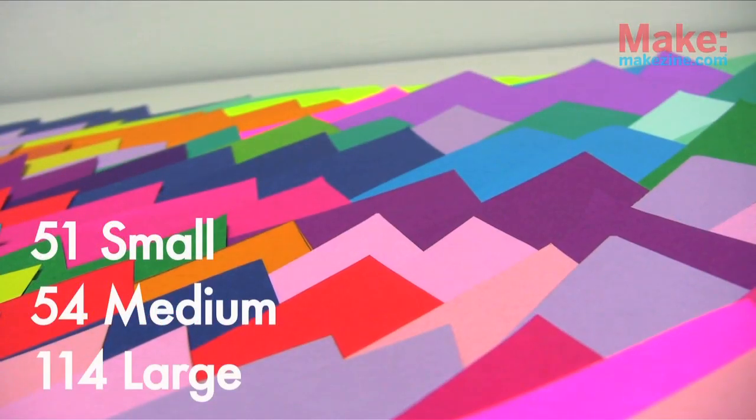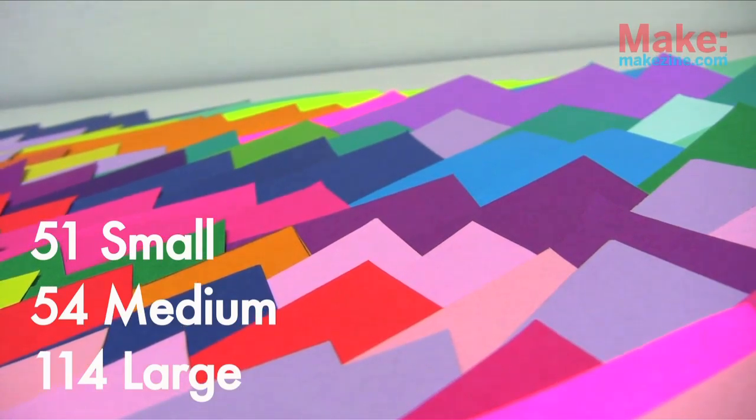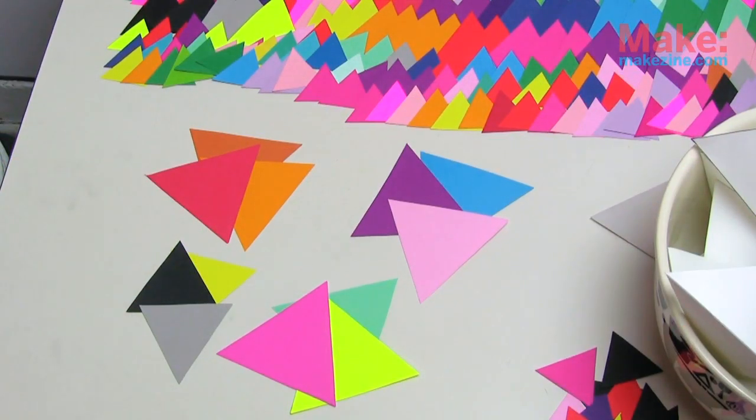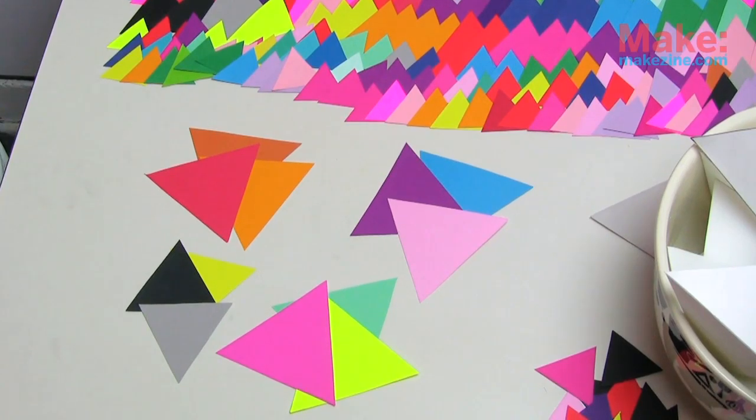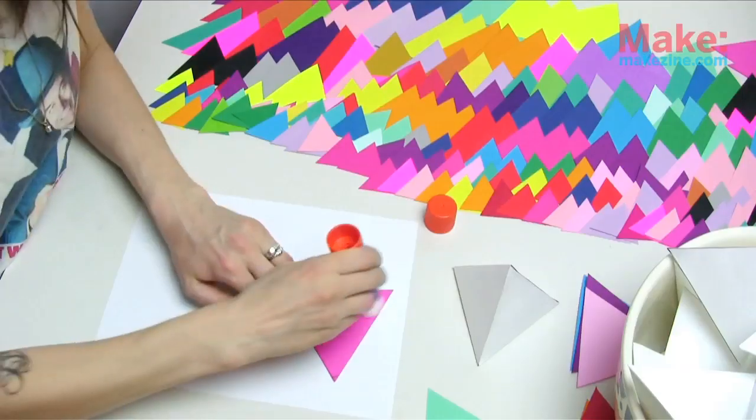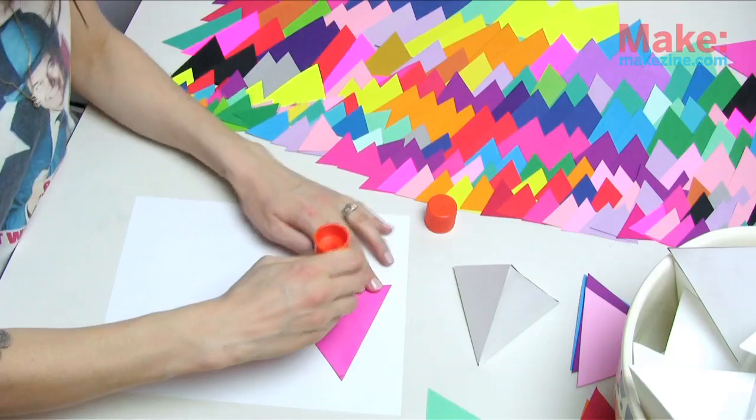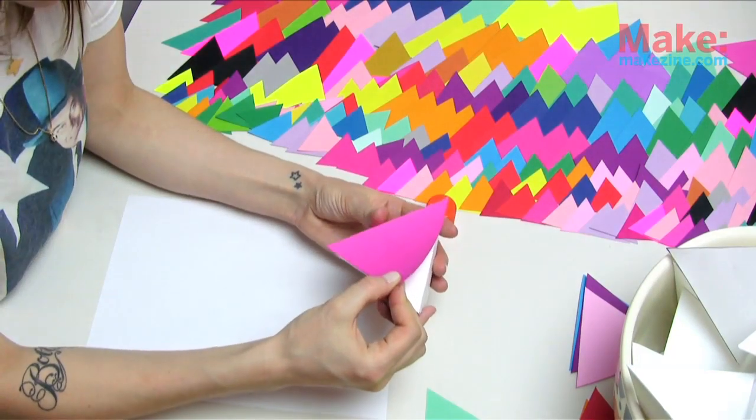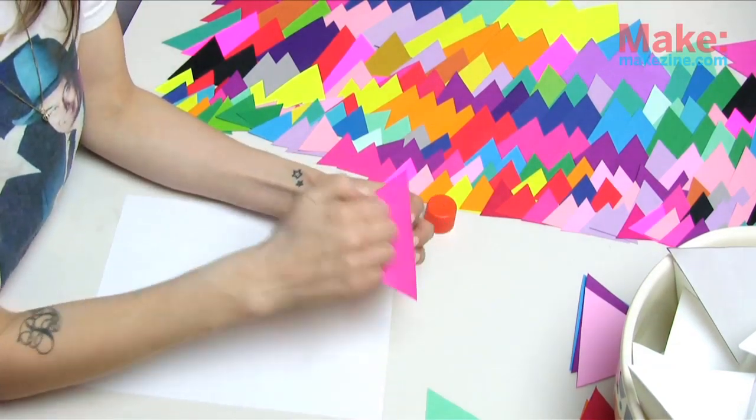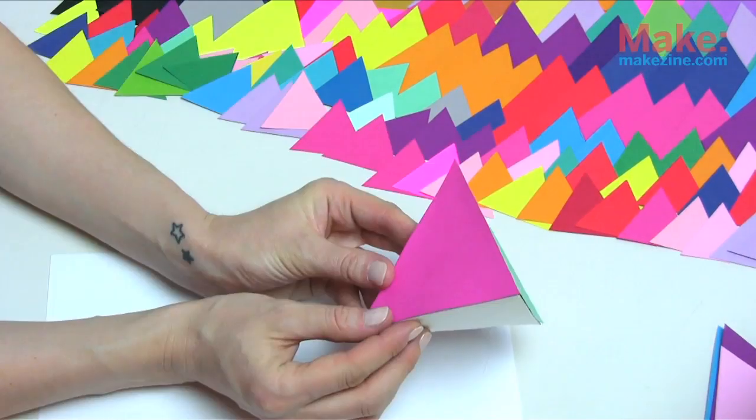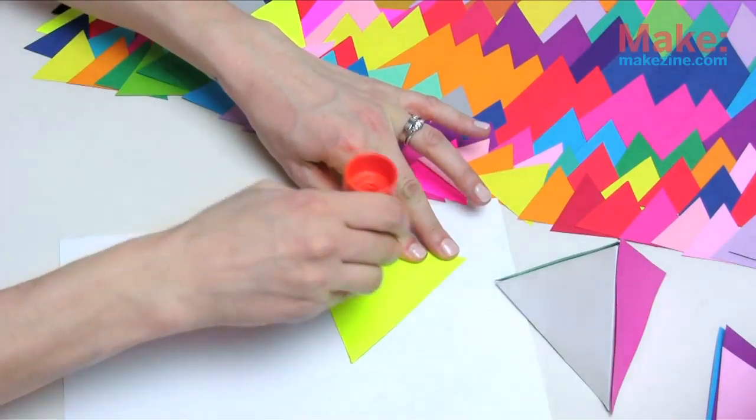I counted how many of each I needed beforehand to prevent superfluous cutting. Take your triangles and make piles of three of the same size in the colors you want to go together. Apply a generous amount of your glue stick to the back of each triangle and apply the glued side to one side of one of your 3D triangles. Apply enough pressure to adhere it keeping in mind that you're working with paper so don't manhandle it.